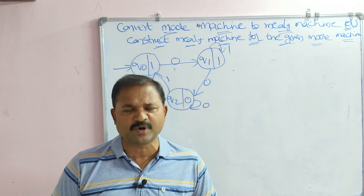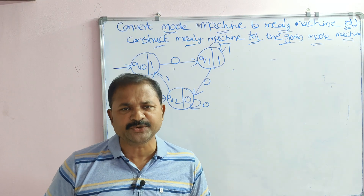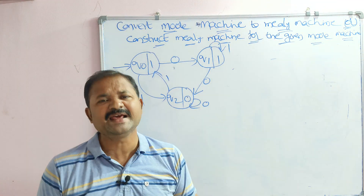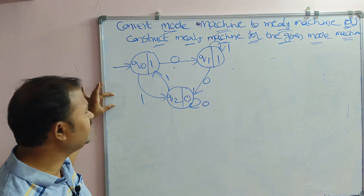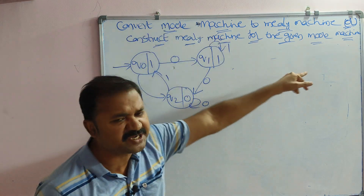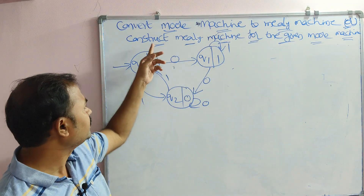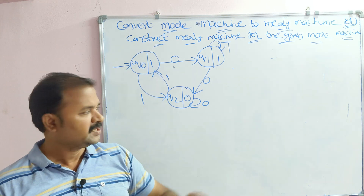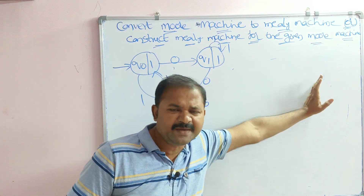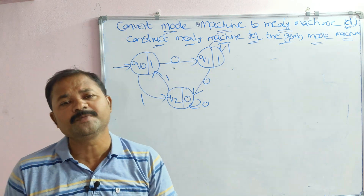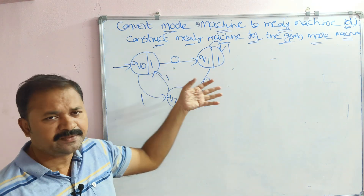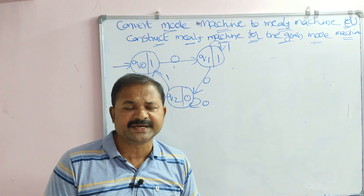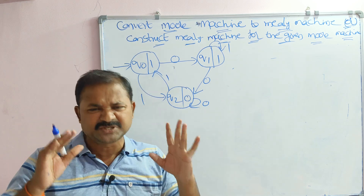Let us discuss converting a Moore machine to a Mealy machine. Here a Moore machine is given and we need to convert it to a Mealy machine, or construct a Mealy machine for the given Moore machine. In the examination, a Moore machine transition diagram or transition table may be given — the procedure will be the same.